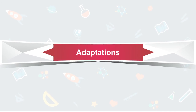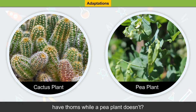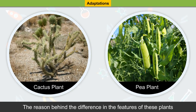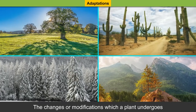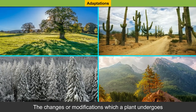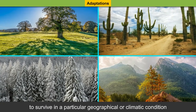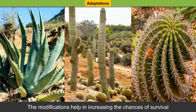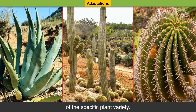Have you ever wondered why a cactus plant has thorns while a pea plant doesn't? The reason behind the difference in the features of these plants is that they grow in different sets of climatic conditions. The changes or modifications which a plant undergoes to survive in a particular geographical or climatic condition are called adaptations. These modifications help in increasing the chances of survival of the specific plant variety.